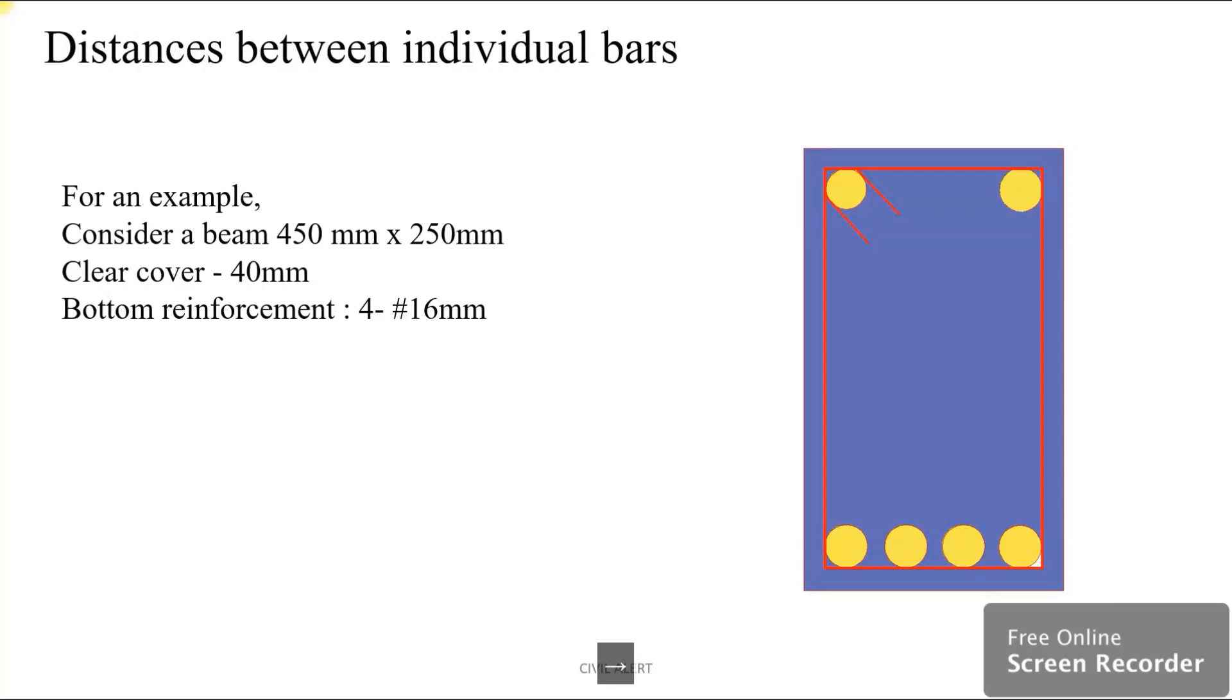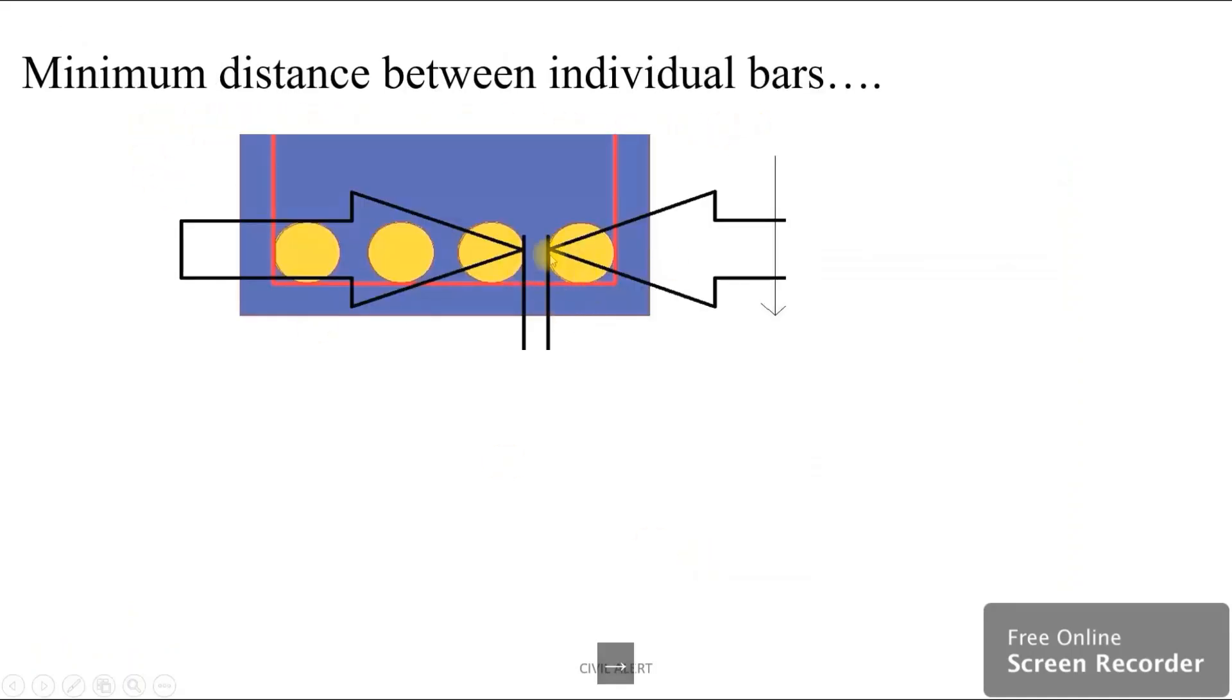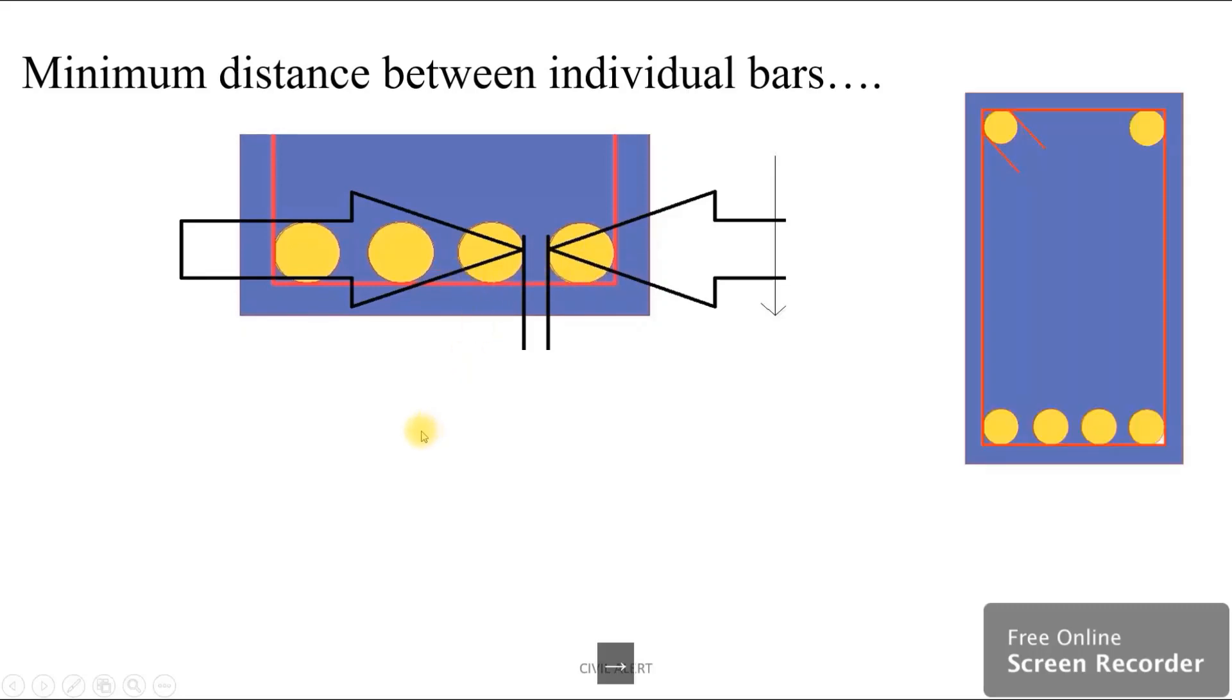For example, consider a beam 450 mm by 250 mm. The clear cover is 40 mm. Bottom reinforcement is four numbers of 60 mm diameter bars. We need to find the minimum distance between individual bars.